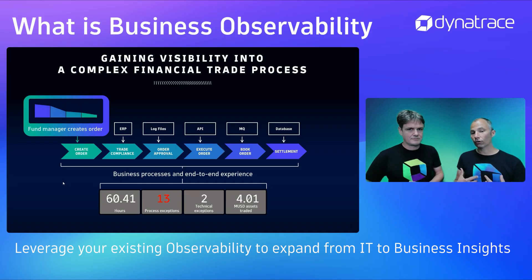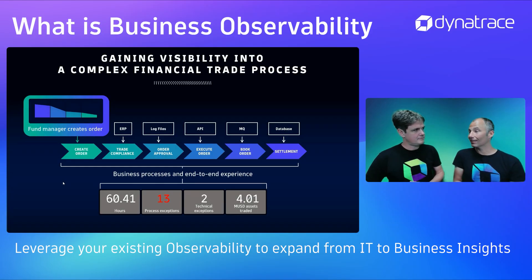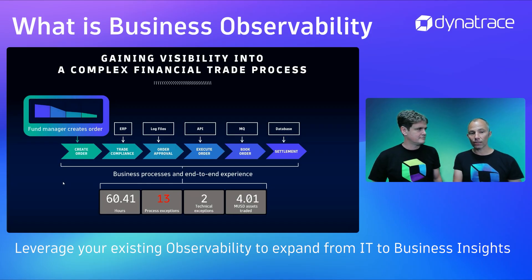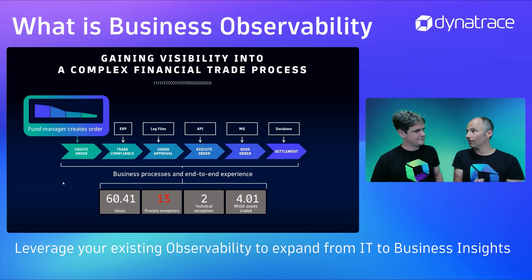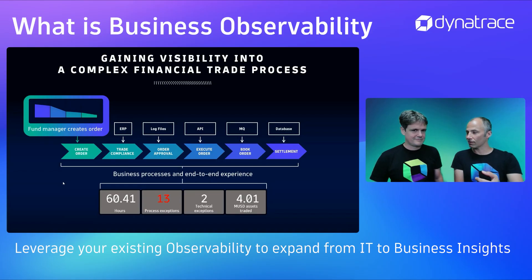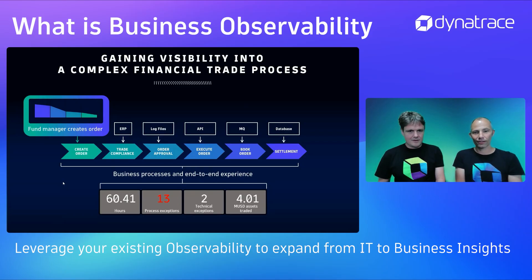What I really like about this — coming from the technical side — is that every organization needs to do technical monitoring anyway, to make sure all your systems are available. Now with Dynatrace we can extract business information from all of those systems you're monitoring anyway, provide an end-to-end view from create order to settlement, calculate key business KPIs, and because everything is still connected, we also know if something is red — is it the process, a bad product, or a technical issue caused by a configuration change in a deployment?